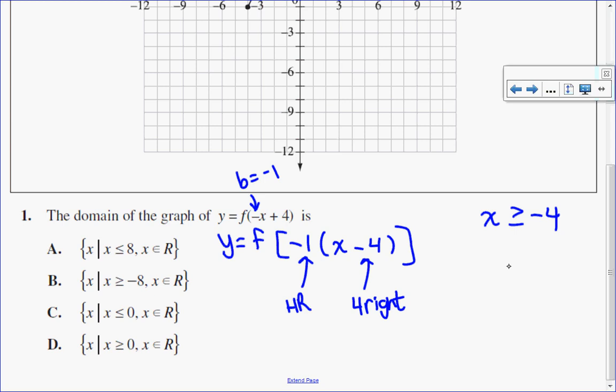So I would do my horizontal reflection first. So instead of the graph being greater than, when I reflect it, it would be less than. Instead of being at negative 4, when I reflect it, it comes to positive 4. So I have x less than or equal to 4.